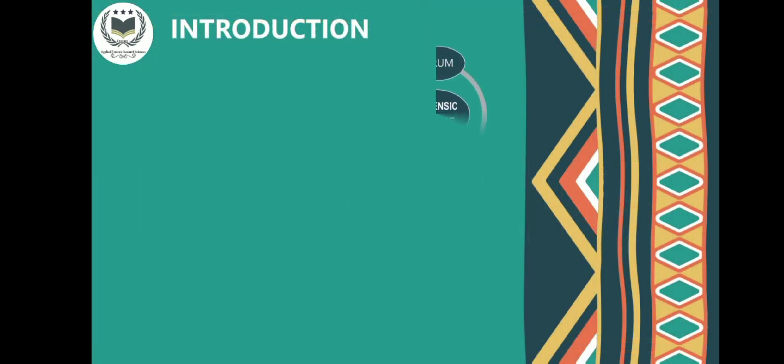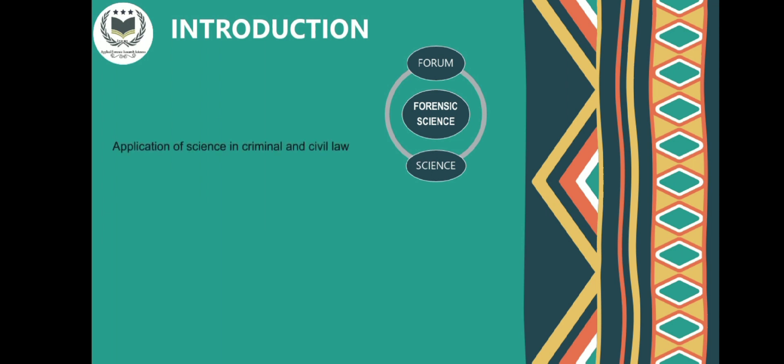The word forensic is derived from the Latin word forensis, which means 'of the forum.' In the ancient Roman Empire, the Senate used to conduct various meetings in a public space termed as forum. Science is the knowledge where things can be tested and verified. So forensic science is defined as the application of basic science to the criminal justice system, or the application of science in criminal law and civil law.